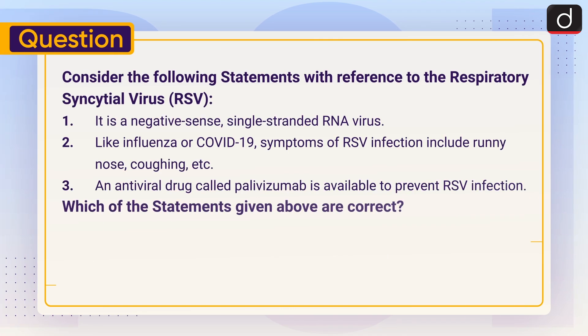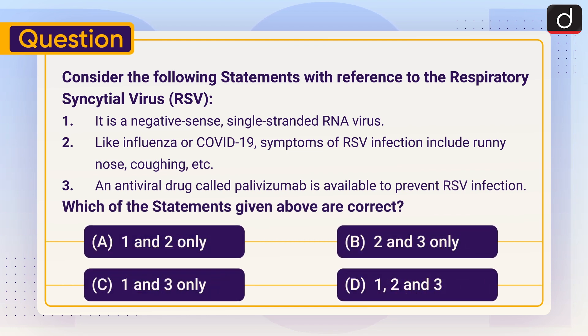Now it's time for the practice question. Consider the following statements with reference to RSV. Statement 1: It is a negative-sense single-stranded RNA virus. Statement 2: Like influenza or COVID-19, symptoms of RSV infection include runny nose, coughing, etc. Statement 3: An antiviral drug called palivizumab is available to prevent RSV infection. Select the correct statements using the options: (a) 1 and 2 only, (b) 2 and 3 only, (c) 1 and 3 only, (d) 1, 2 and 3. Don't forget to answer in the comment section.